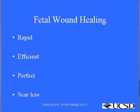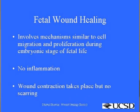I would like to talk about fetal wound healing and how it differs from adult wound healing. The main characteristics of fetal wound healing are that it is rapid, very efficient, and perfect — meaning scarless, especially in the fetal period. It involves mechanisms similar to cell migration and proliferation during embryonic stages. The cells responsible are embryonic stem cells, which can differentiate into exactly the type of tissue needed for wound healing. Fetal wound healing does not involve inflammation and has wound contraction at a minimum rate with no scarring.